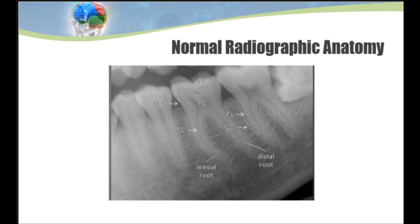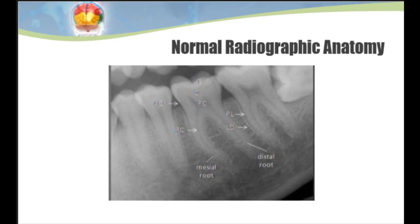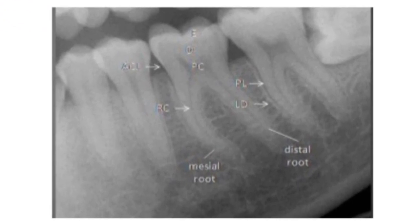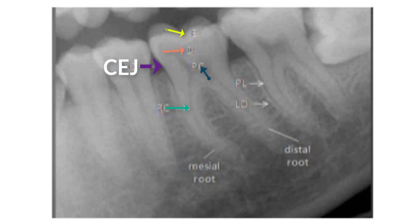Now let's look at normal radiographic anatomy. We have the enamel, which is a more dense outer layer around the crown. Underneath the enamel we have the dentin, and then the pulp chamber and pulp canals that run down the tooth. Where the enamel and the cementum meet is what we call the CEJ. On a radiograph you can typically see where the enamel ends and the cementum begins.